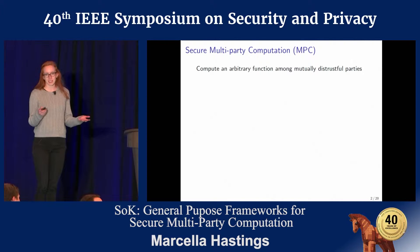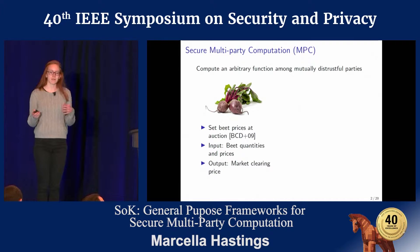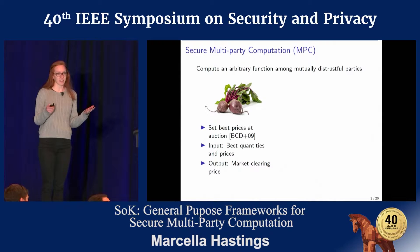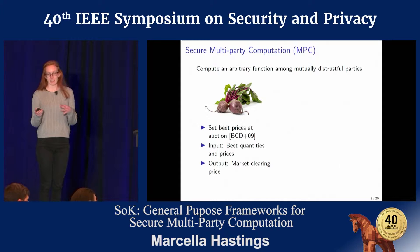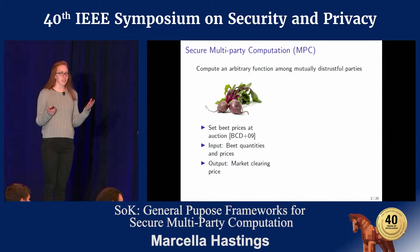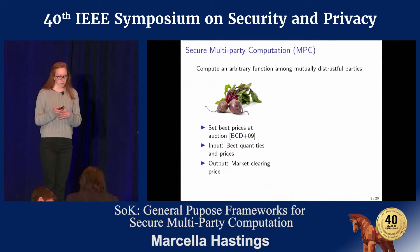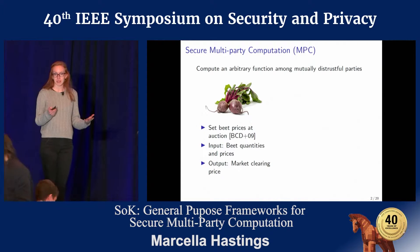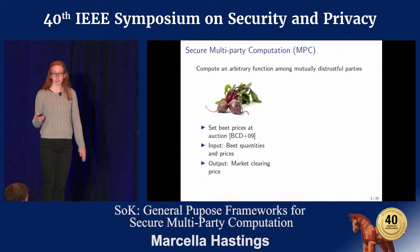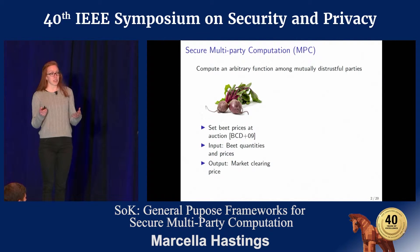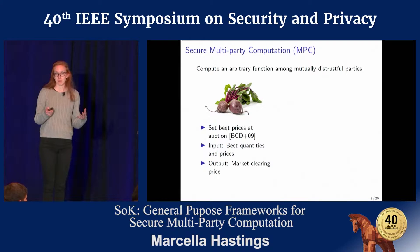The most famous example of this in practice is the Danish beet auction. In this setting, we have sellers who are Danish beet farmers and a single buyer, the only beet processing facility in Denmark. The sellers have prices at which they're willing to sell their beets and the buyer wants to find a market clearing price. But the sellers might not want to reveal their bids because it could reveal information about their businesses and their farms, especially over several years. So they use Secure Multiparty Computation to find an appropriate market clearing price without revealing the value of their bids.